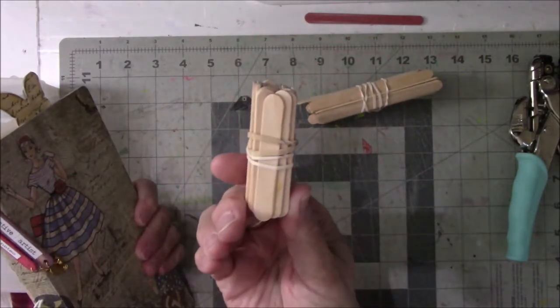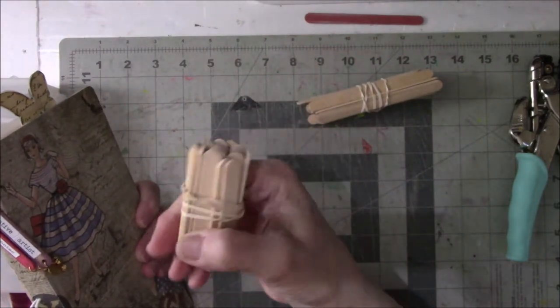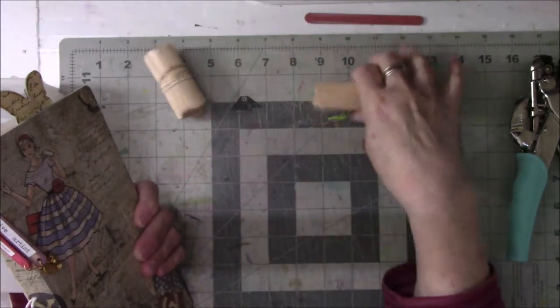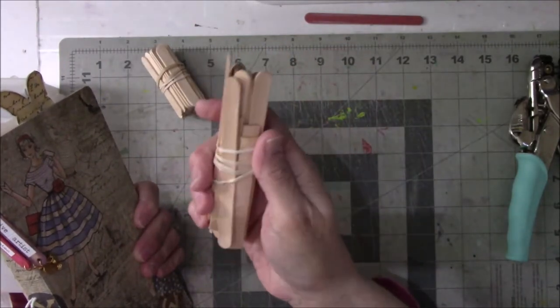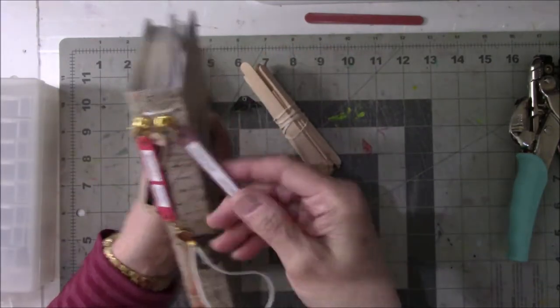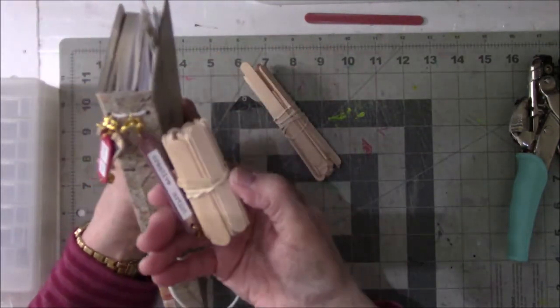I have small ones from the little tiny wooden books that I made, little fence books, and then I have the large ones. Today I'm going to use the large ones, but this is the size, the little ones.